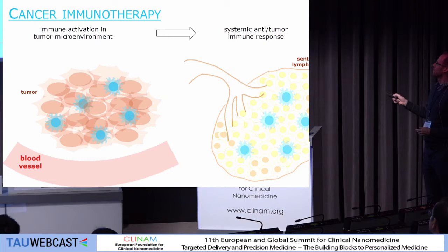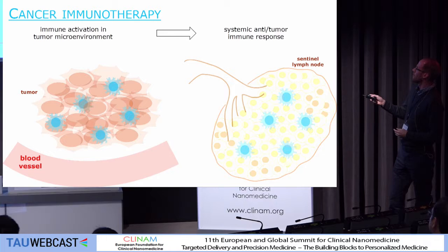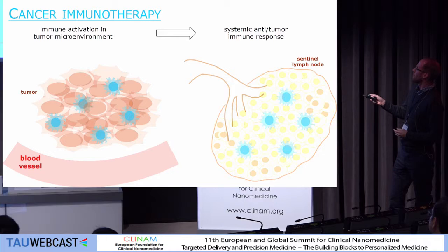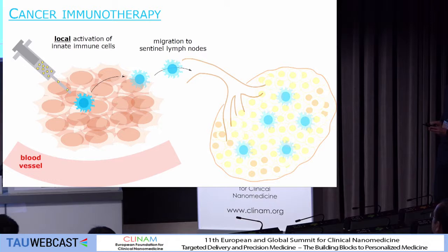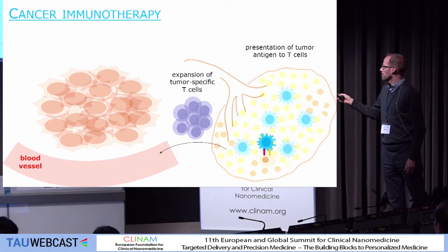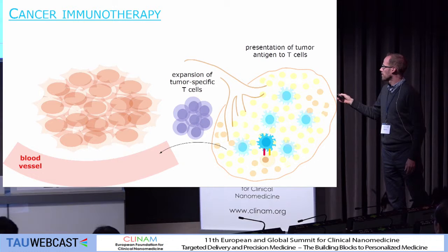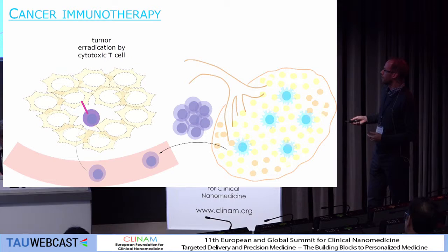Imagine this is a solid tumor and this is the sentinel lymph node. Our idea was: how can we activate innate immune cells — typically dendritic cells and macrophages — in the tumor microenvironment to then induce a systemic immune response that can attack this tumor? The first step would be to locally activate innate immune cells in the tumor microenvironment. These innate immune cells would then migrate to sentinel lymphoid organs. Their activated dendritic cells should present tumor antigens to T cells. These T cells would then proliferate, expand, and home to tumor tissue where they can recognize cancer cells and eradicate them one after the other.